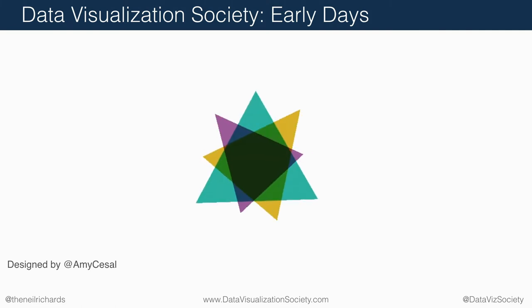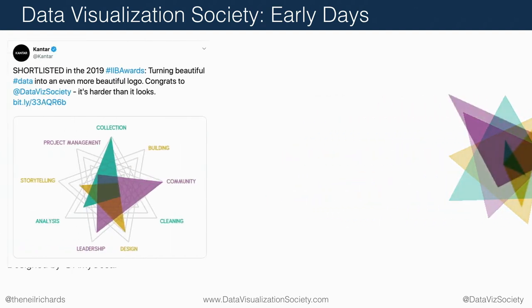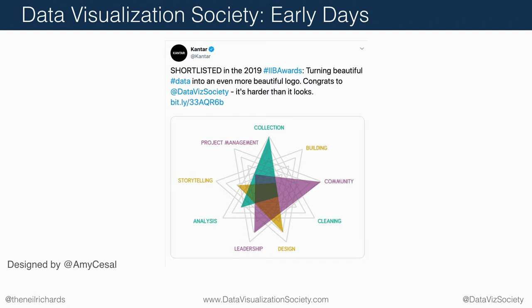And it became a logo. The logo you may have seen — you've seen me handing out badges and stickers — evolved into this logo of three triangles. That came from everyone's answers to surveys. We had questions about data, about visualization, and about society. Those all made up an individual badge for everyone. So for everyone in the society, they all have their own little individual prints, and then that became homogenized into a badge which represents the society.